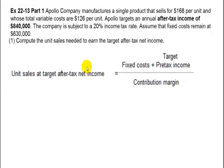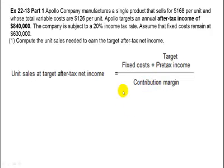We have a formula that says unit sales at target after-tax income equals fixed cost plus target pre-tax income divided by contribution margin. We have fixed cost and we can get contribution margin, but what we don't have is target pre-tax income.